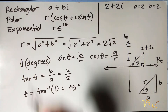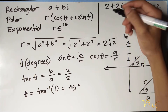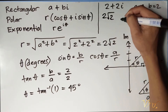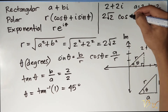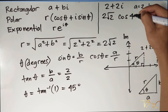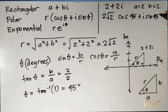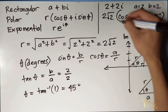We can now write our complex number into its corresponding polar form: 2 square root of 2 times (cosine 45 degrees plus i times sine 45 degrees). This is the polar form of our complex number 2 plus 2i.